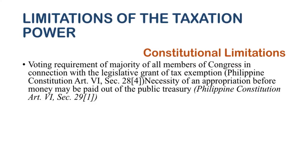Next is the voting requirement of a majority of all members of congress in connection with the legislative grant of tax exemption. If the congress wants to grant certain individuals, corporations, or a class of taxpayers a tax exemption, there must be a concurrence of the majority of all members of congress before such exemption can be passed.